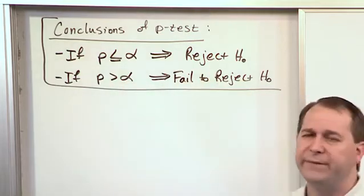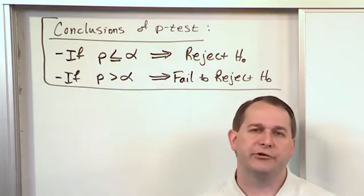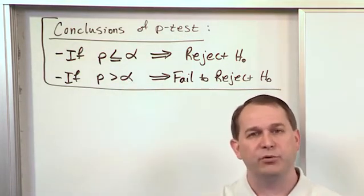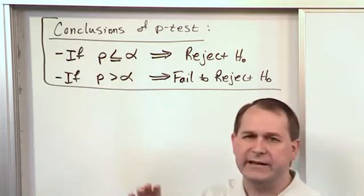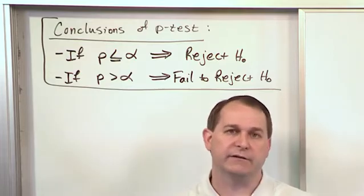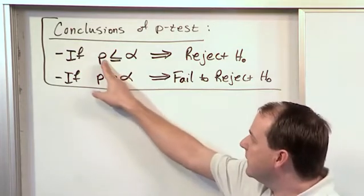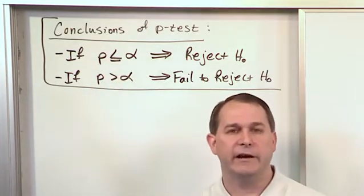If it's greater than, we fail to reject. And I drew a lot of pictures for you. And hopefully by now I've proved to you that basically this comparison, if you remember the level of significance is a shaded area in the tail of the curve. And also the p-value is also a shaded area in the tail of the curve.